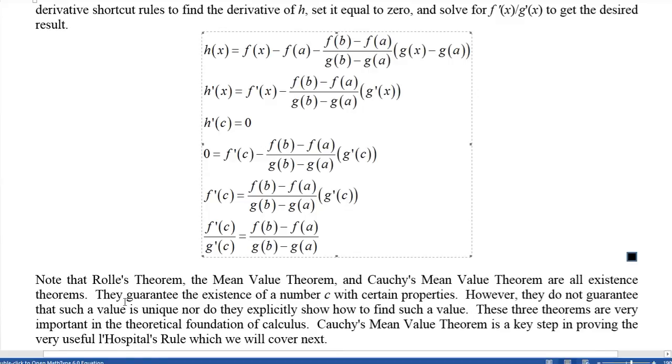For a couple of final notes on this section, notice that Rolle's Theorem and the Mean Value Theorem and Cauchy's Mean Value Theorem are all what we call existence theorems. They guarantee the existence of a c such that whatever the condition is—like this condition here—is satisfied, provided all your properties in the hypothesis are satisfied. But it doesn't explicitly show us how to find that value of c; we have to get our hands dirty with finding derivatives and solving equations and so forth to do that.